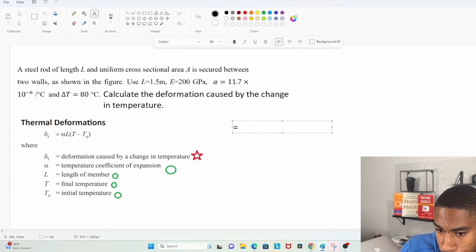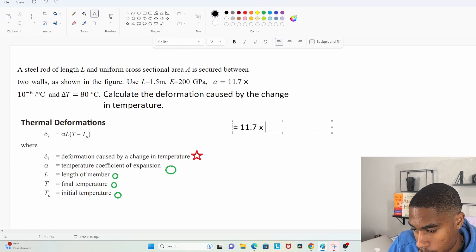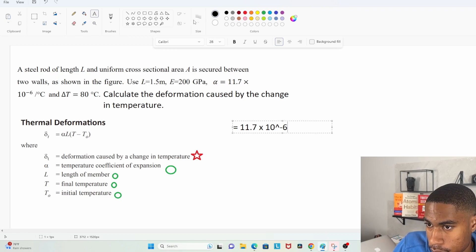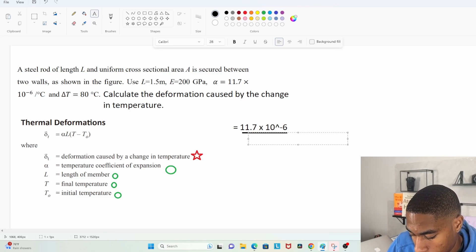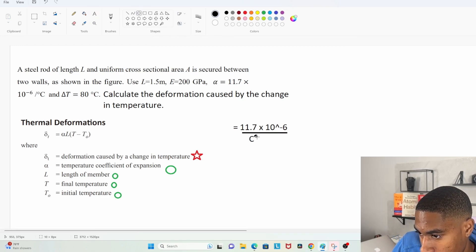We will say, okay, our temperature coefficient is equal to 11.7 times 10 to the negative 6, and it's divided by celsius. So I will put kind of like a bar here and we'll put a celsius with a little circle up above it so we know that's celsius.